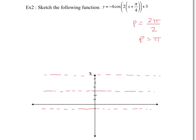Now we need to figure out where the graph starts. The graph starts shifted left by pi over 4, so I'll make sure that value is on my axis. Since the period is pi split into four sections of pi over 4, I'll label the axis: negative pi over 4, then pi over 4, pi over 2, 3pi over 4, and pi going right; and negative pi over 2 going left.